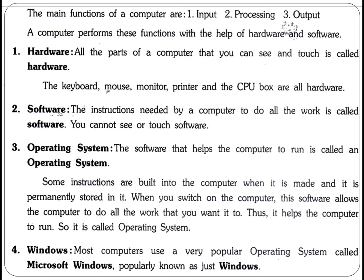Now, the next one — software. The instructions needed by a computer to do all the work are called software. You cannot see or touch the software. Software is the opposite of hardware. Hardware parts we can touch; parts we cannot touch — like those that only give instructions to the computer to do work — that is the software. Just like we have applications on our mobile phones.